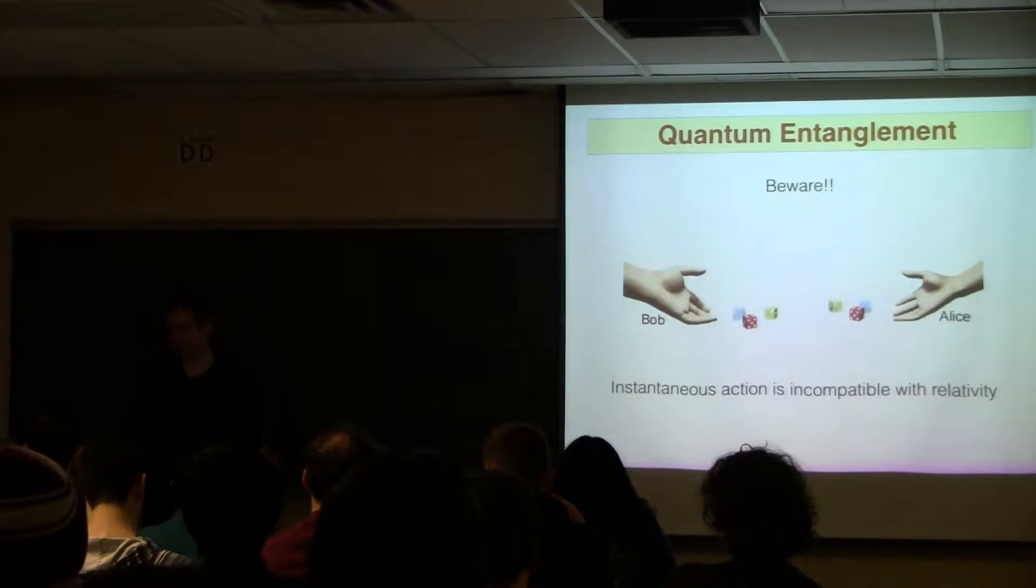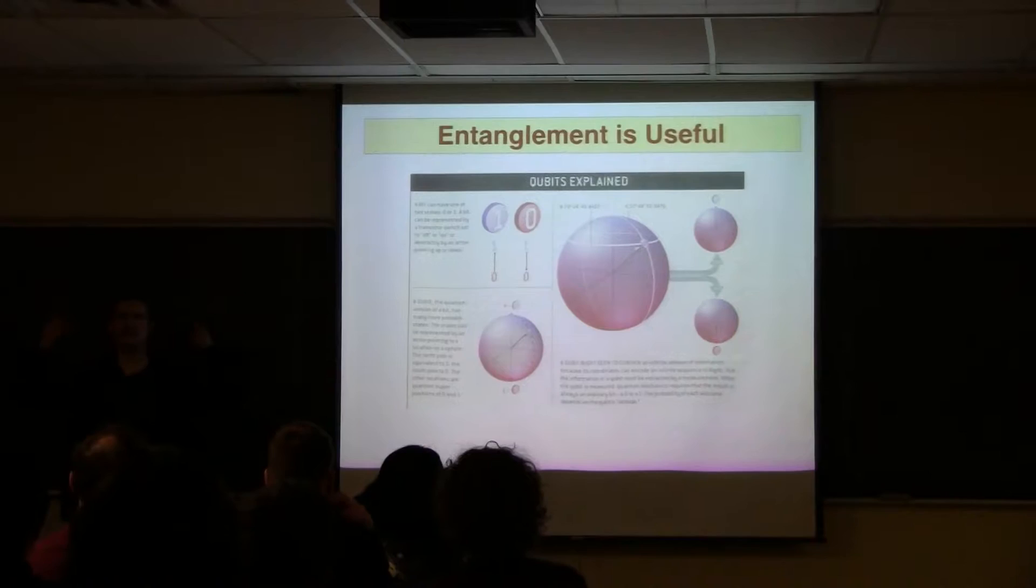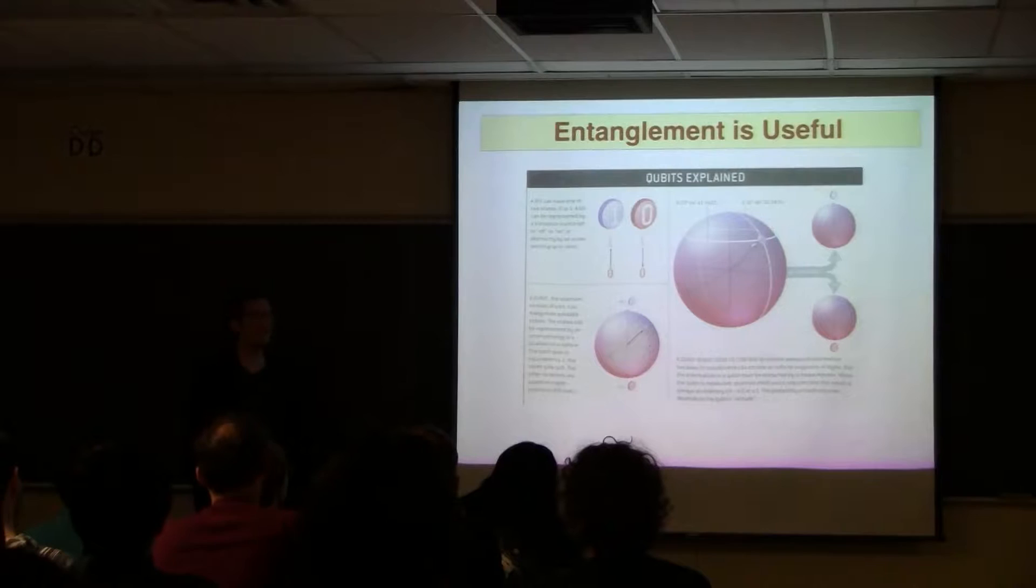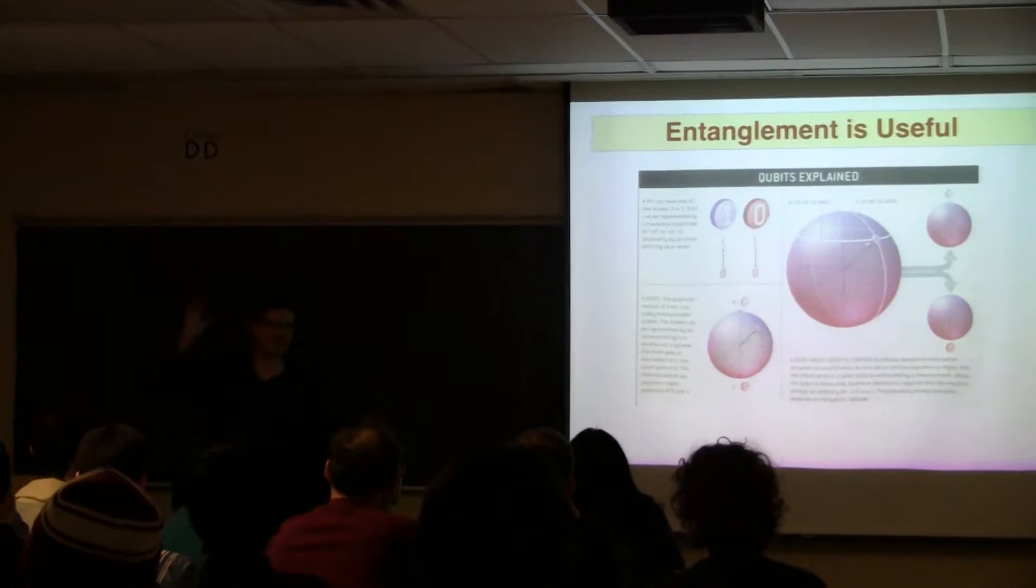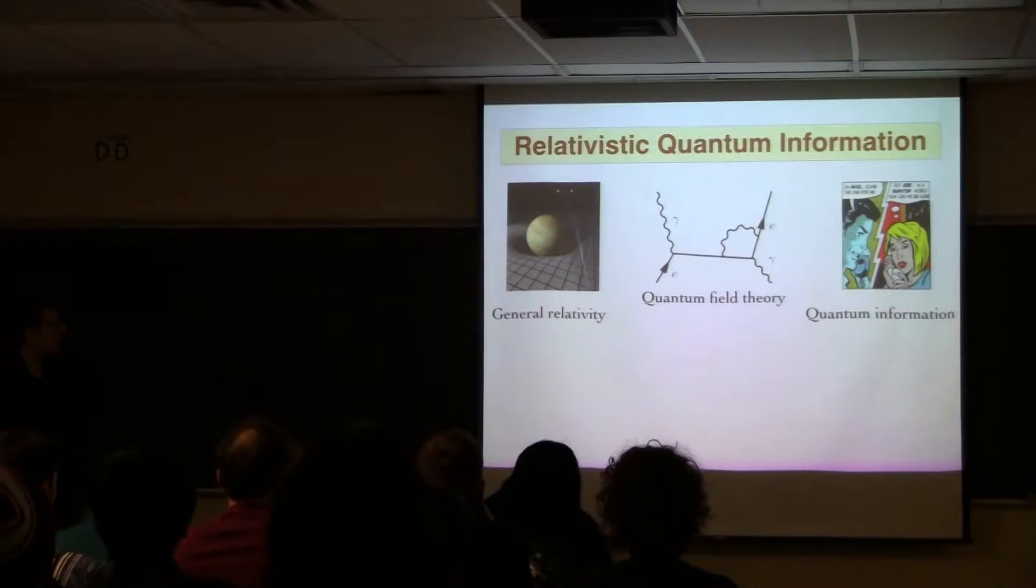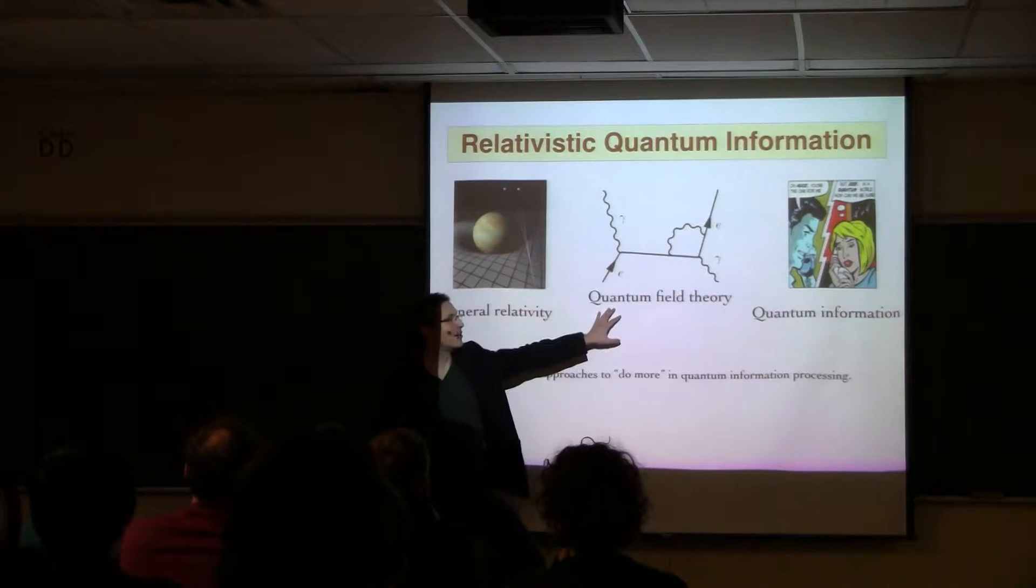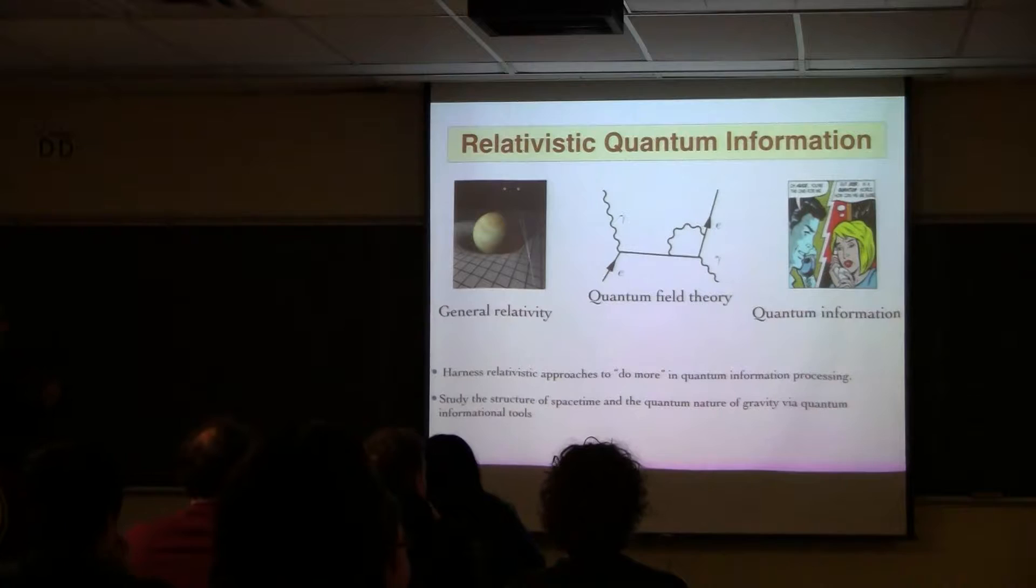Anyway, it so happens that entanglement is a useful thing. You may have heard about quantum computers and the promise of an immense amount of computing power when we can build those. And it may actually happen one day. You can tell that it will happen when Google just starts throwing money at it. So it will definitely happen. Anyway, so here's where the field of relativistic quantum information comes in. So relativistic quantum information is, if you want, the superposition... No, just kidding. It's actually classical superposition. It's not quantum. Of general relativity, quantum field theory, and quantum information.